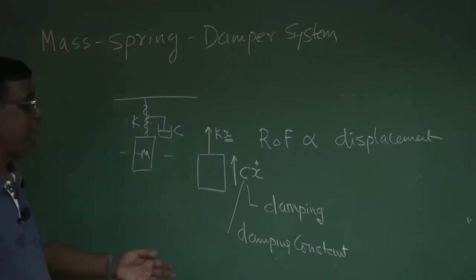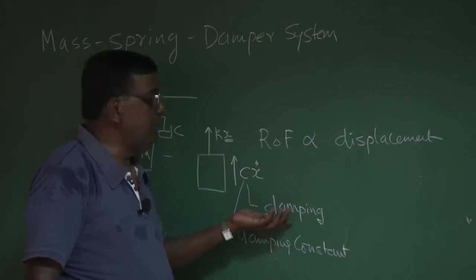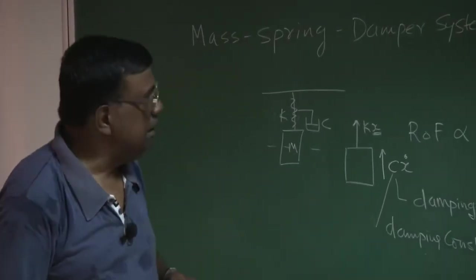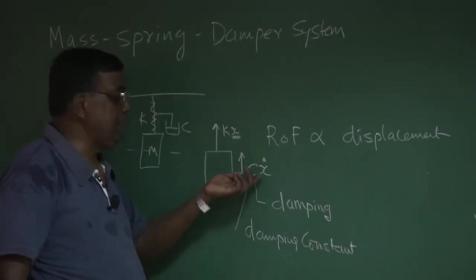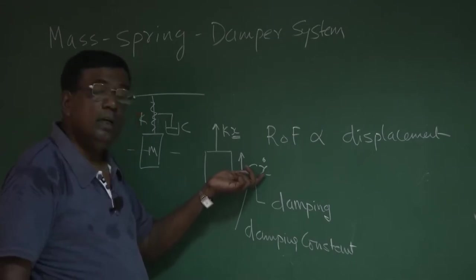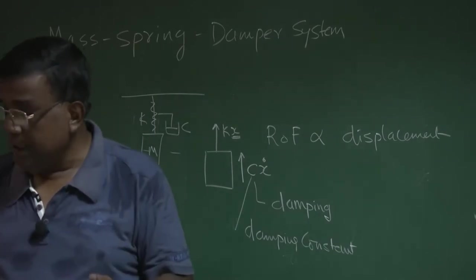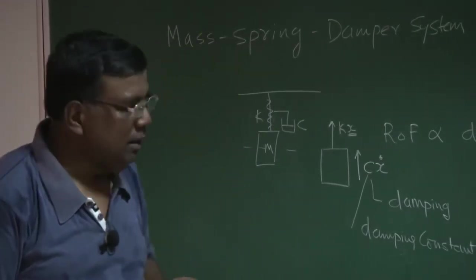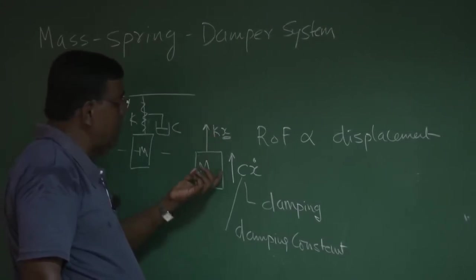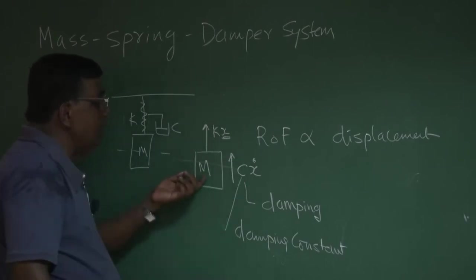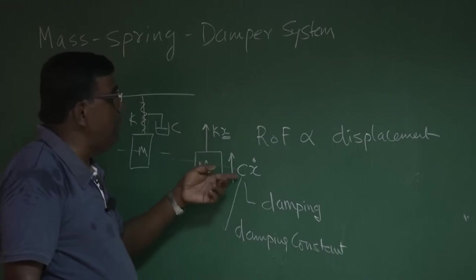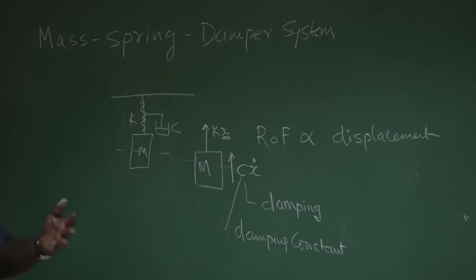Damping here is essentially friction damping — energy is lost because of friction, primarily as heat. We also assume linear damping, meaning the damping force is c·ẋ, which is linear. We have the liberty to assume linear damping because we are talking about small perturbations. So the mass has both a restoring force proportional to displacement and a damping force proportional to rate; these combined try to oppose the motion and bring it back to equilibrium.